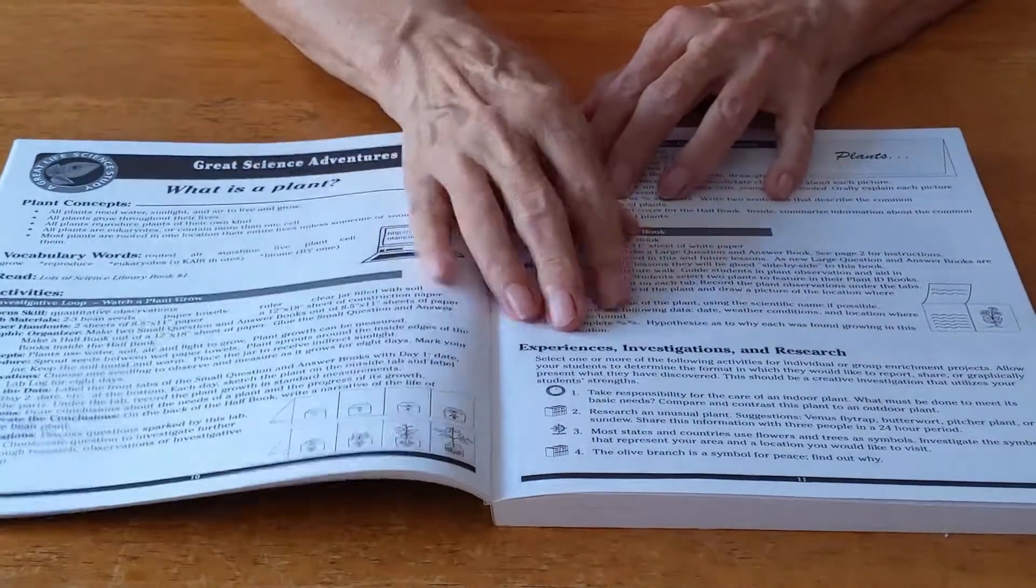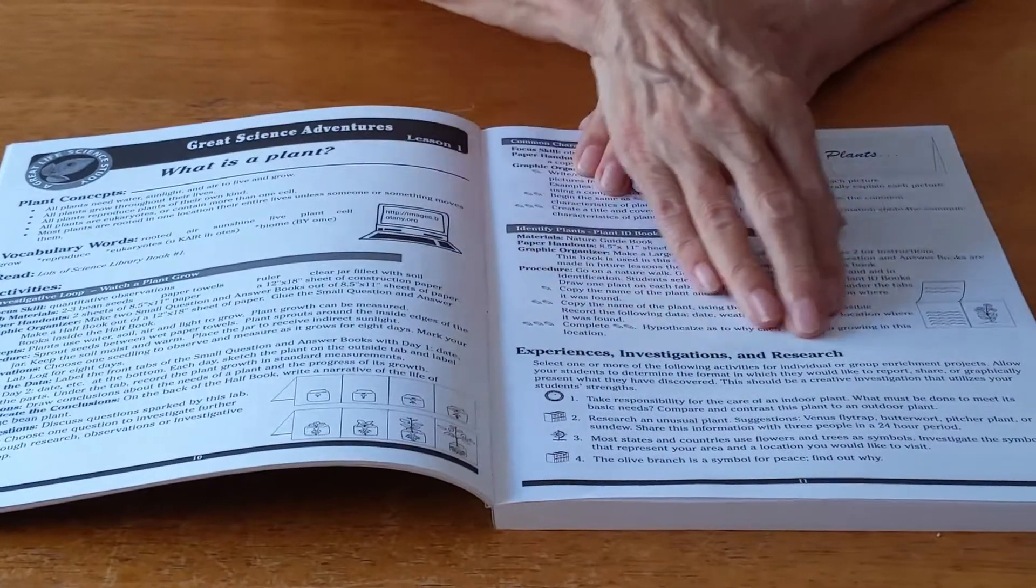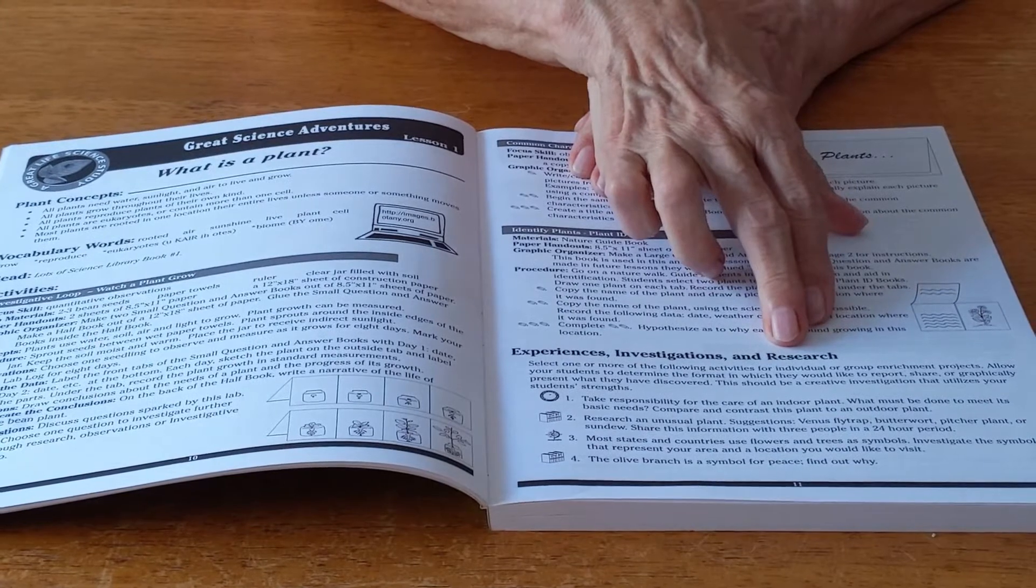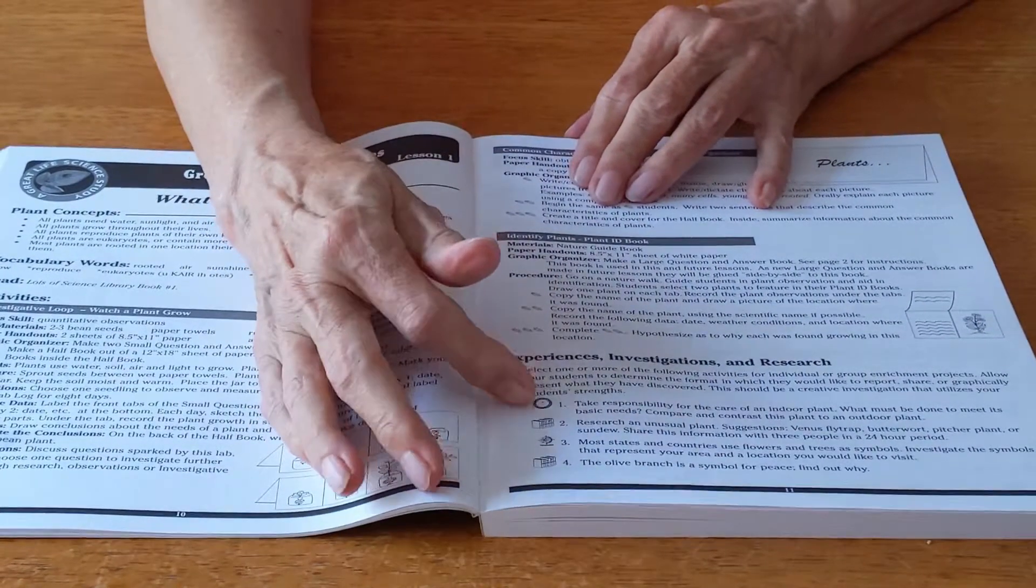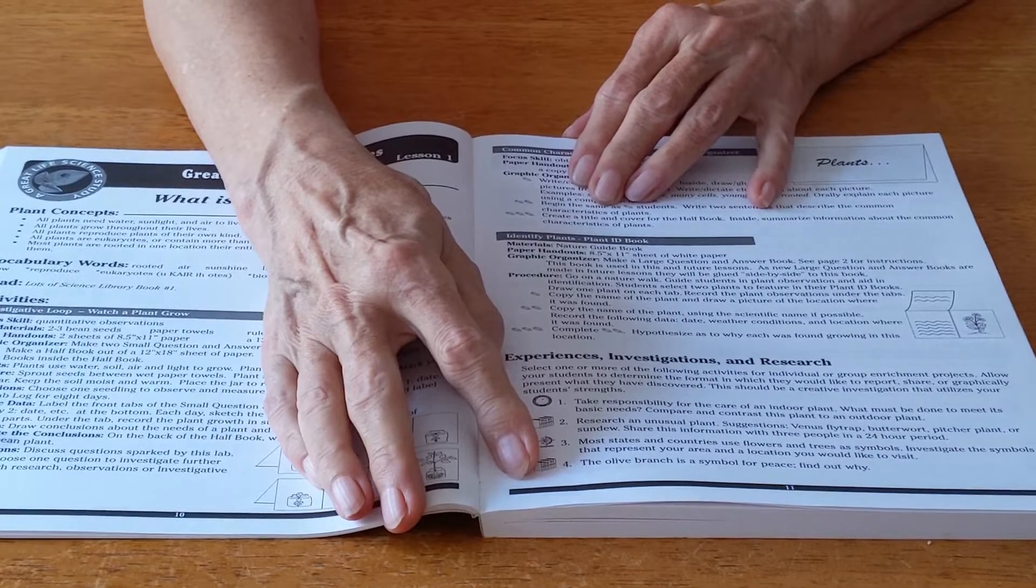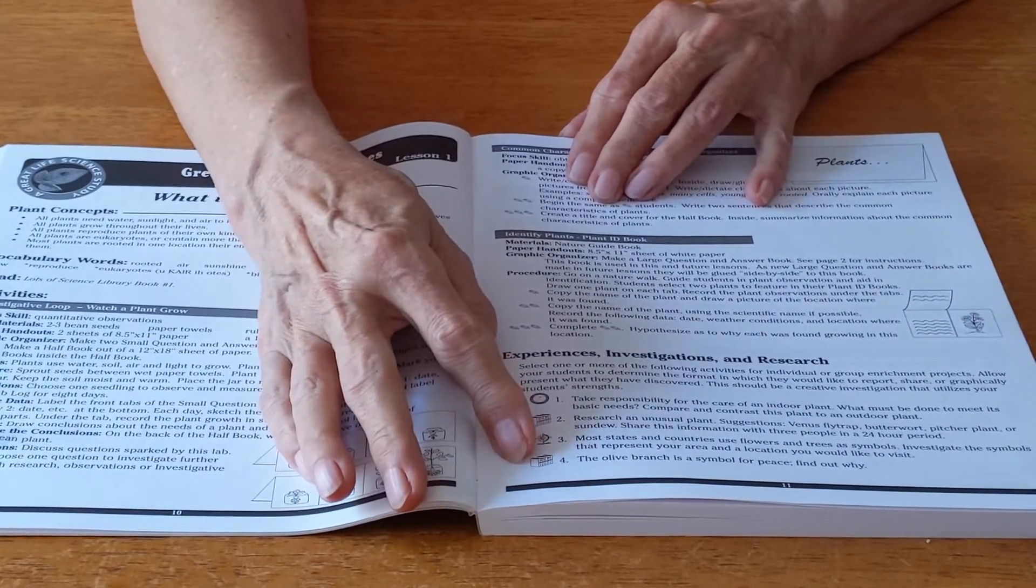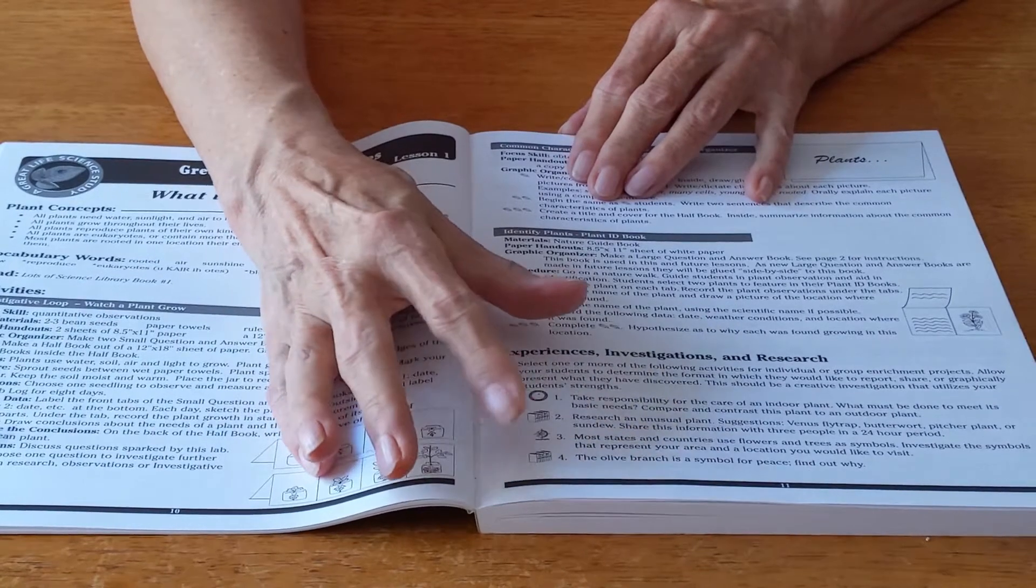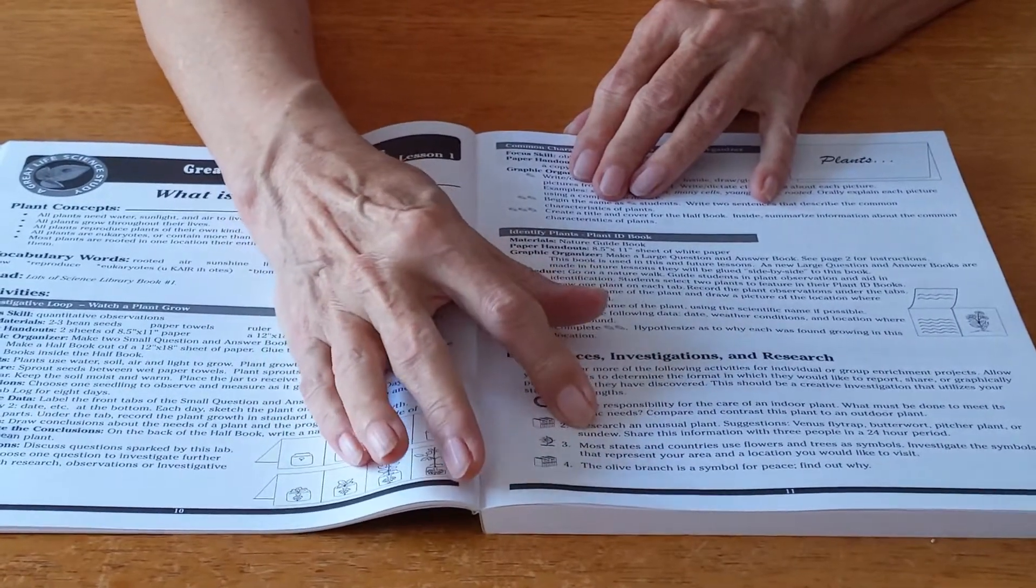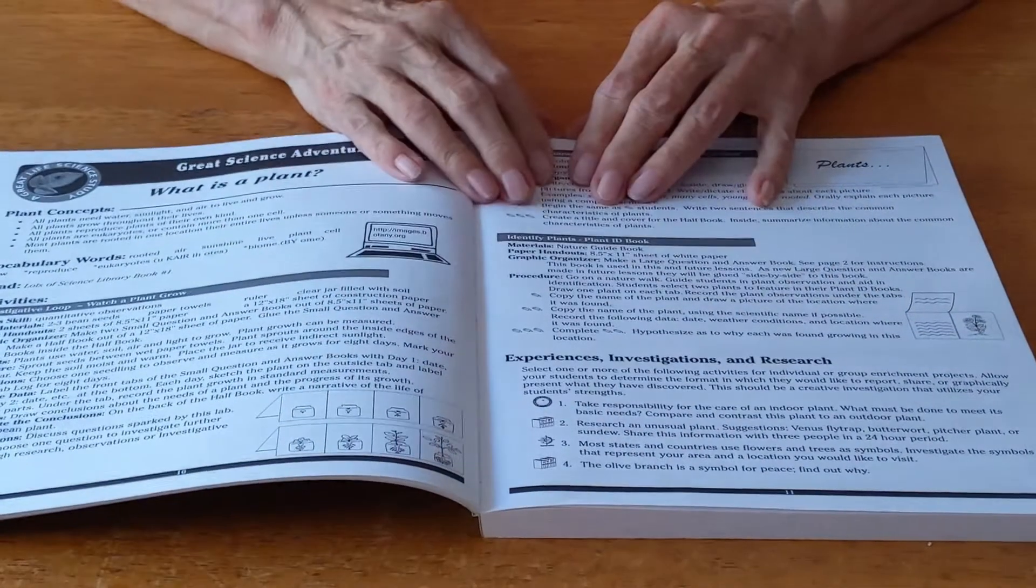Also in every lesson we have experiences as to investigations and research. These are additional activities that you can add to this lesson. Some are for younger students, some are for older. But if you're teaching a seventh or eighth grader you may want to look in here and see if there's something for them.